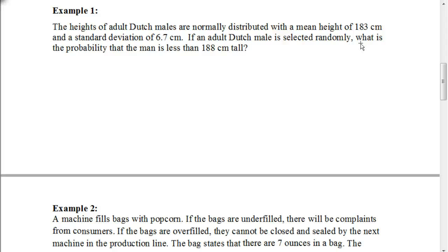Here it says the heights of adult Dutch males are normally distributed with a mean height of 183 centimeters and a standard deviation of 6.7 centimeters. You might recognize this example from the very first lesson of this chapter, Lesson 11.1. It says if an adult Dutch male is selected randomly, what is the probability that the man is less than 188 centimeters tall? To find the probability, we need to figure out what the z-score would be so we can use that standard distribution table.